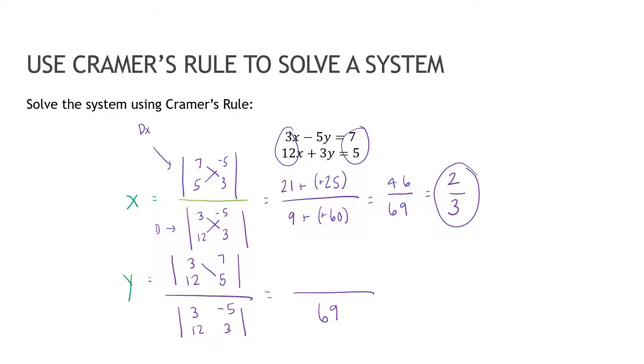So here I've already discovered that this is sixty nine. I'm not going to show that work again. Here I get 15 minus 84 and 15 minus 84 is negative 69 and negative 69 divided by 69 is negative one. So my solution, oops, my solution is two thirds comma negative one. Again, you can always take the time to plug that answer back in to make sure that it's correct.